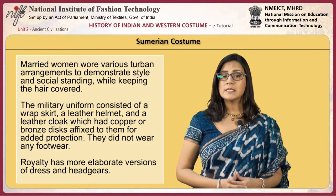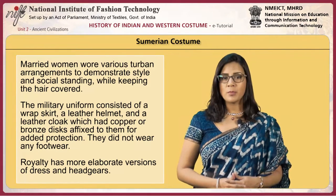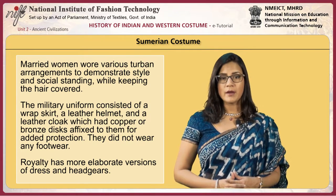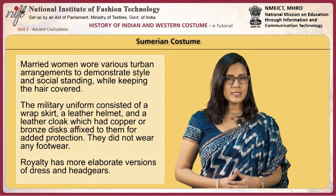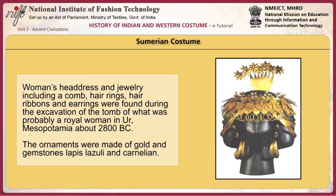The military uniform consisted of a wrap skirt, a leather helmet and a leather cloak with copper or bronze discs affixed for added protection. They did not wear any footwear. Royalty had more elaborate versions of dress and headgear. Women's headdress and jewelry — including a comb, hair rings, hair ribbons and earrings — were found during excavation of the tomb of a probable royal woman in Ur, Mesopotamia, around 2800 BC. The ornaments were made of gold and gemstones, lapis lazuli and carnelian.